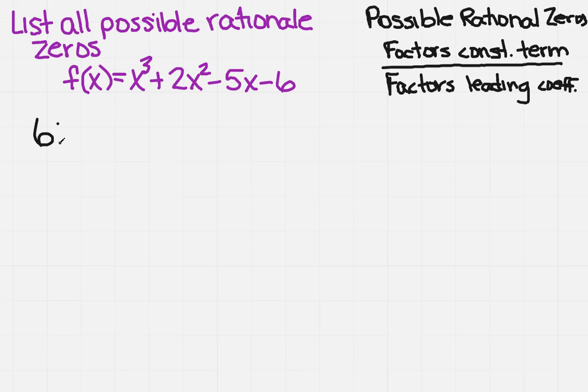Now I'm going to list all the factors. I know that 6 is 1 times 6, so I'm going to write that here. 1 times 6 and 2 times 3.